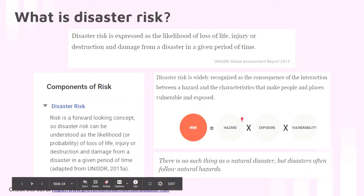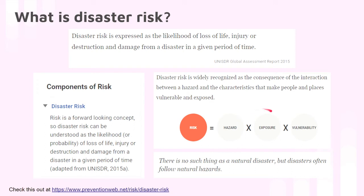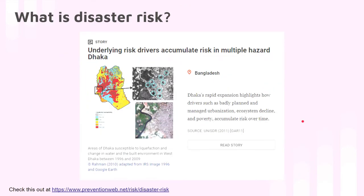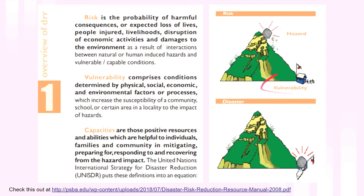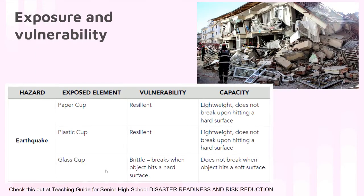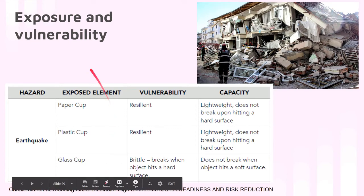Risk is exposure to a hazard, factoring in the exposure of the people and their vulnerability to the hazard. If no one is living near the mountain, even if there's an earthquake, there will be no disaster — it will just be a regular geological event. It only becomes a disaster when there is a loss of life, loss of property, or damage to property.